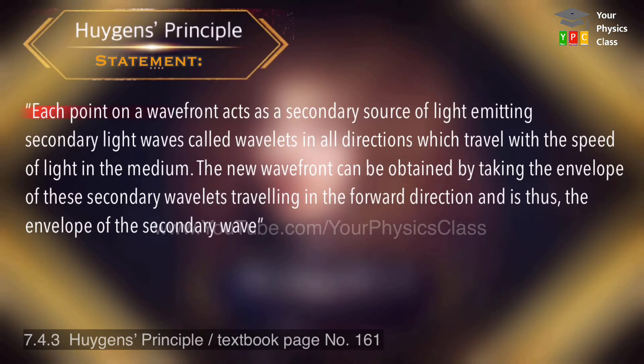Each point on the wavefront acts as a secondary source of light emitting secondary light waves called wavelets in all directions which travel with the speed of light in the medium. The new wavefront can be obtained by taking an envelope of these secondary wavelets.